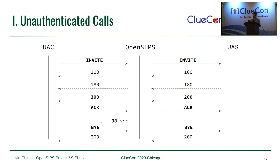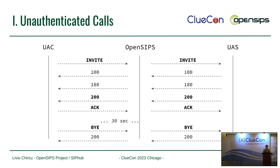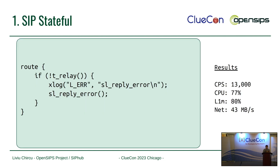First is the unauthenticated calls - just a simple call flow. Just establish the call, wait a bit, and shut it down. Just going stateful, just a T-relay transactional SIP, not stateless. The results are pretty impressive still, even with modern OpenSIPs. Back then the wiki page shows it was doing around 17,000 CPS. Nowadays it is doing roughly 13K, and that is where it reaches a saturation point - saturating all four CPUs no matter how many workers you give it.